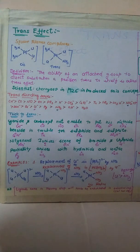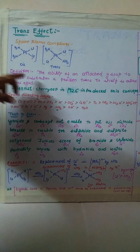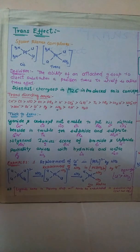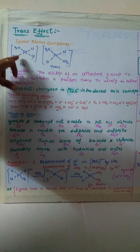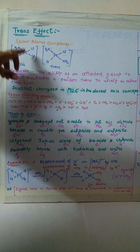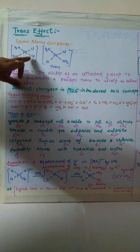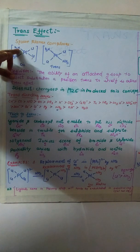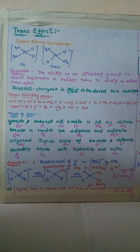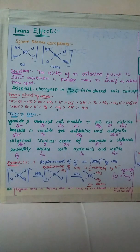The definition of trans effect: the ability of an attached group to direct substitution at a position trans to itself is called trans effect. The attached group means the ligands. If I take this Cl, you have the trans position — if substitution will occur, it will labilize this trans position. This concept was first given by scientist Chernyaev in 1926.